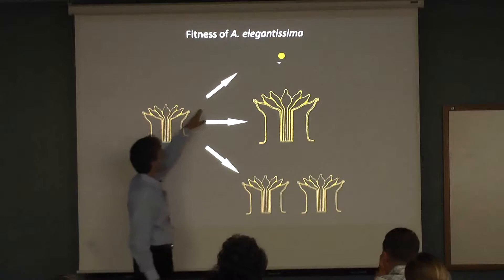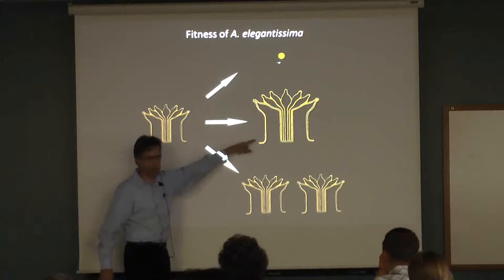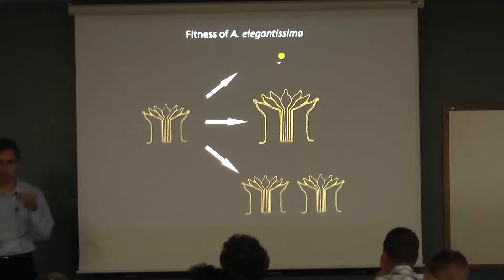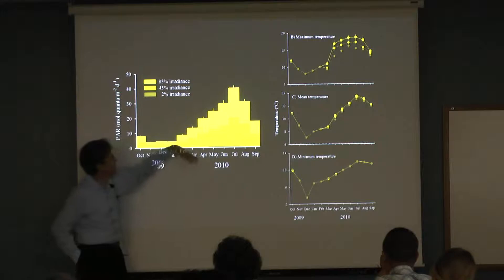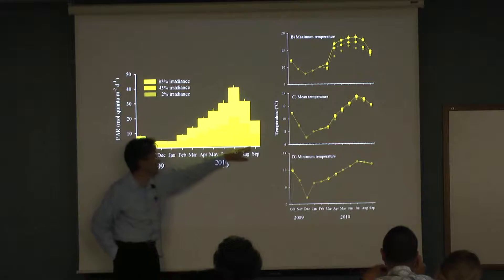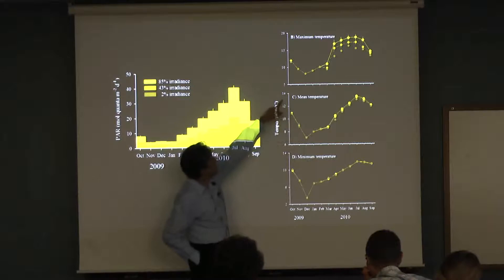Over the next period, we made measurements we would call fitness. Those could be divided into sexual reproduction and gonad growth, growth of the body (somatic), and fission rates. By knowing every individual, we could track those over time. The light levels did fall out pretty clearly — much higher in the 85 condition, dropped down to 43, and the very low light had almost no light at all.